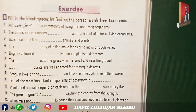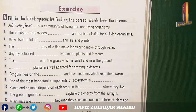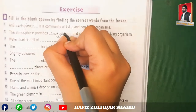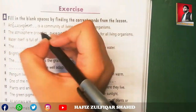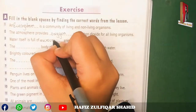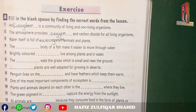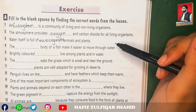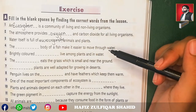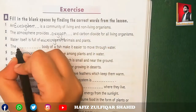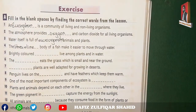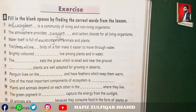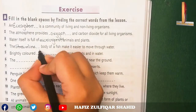For all organisms, the atmosphere gives us carbon dioxide and oxygen. Number three is water itself, full of animals and plants. Number four is the streamlined body of fish, which helps it to easily float and move through water. Number five is brightly colored animals that live among plants and in water, like the brightly colored frogs found in rainforest habitats.